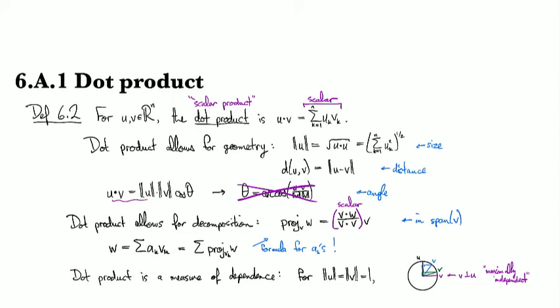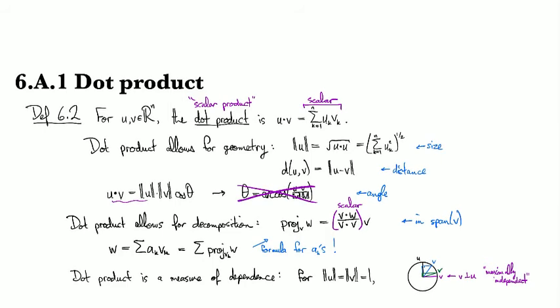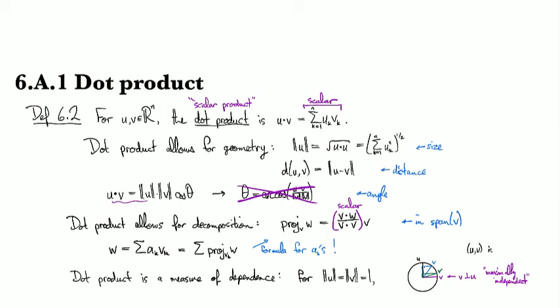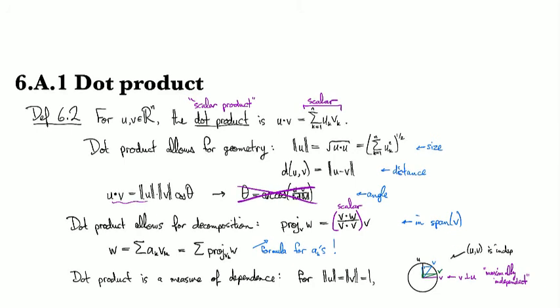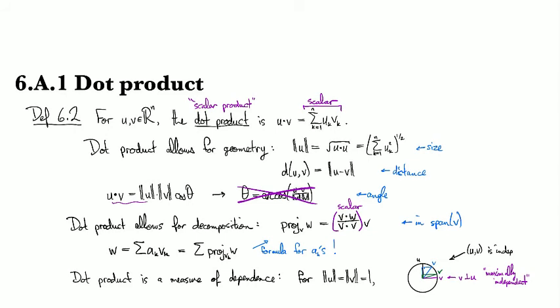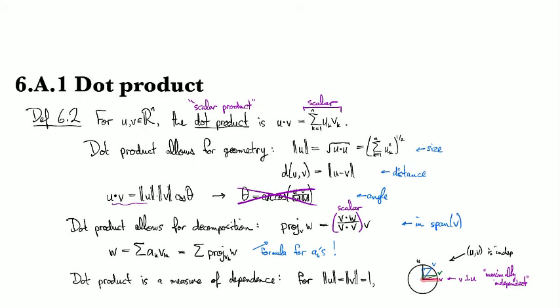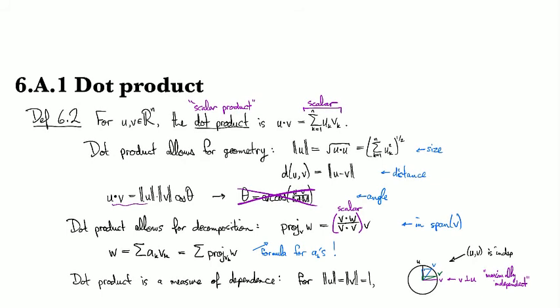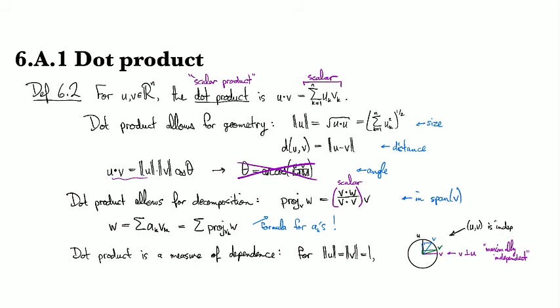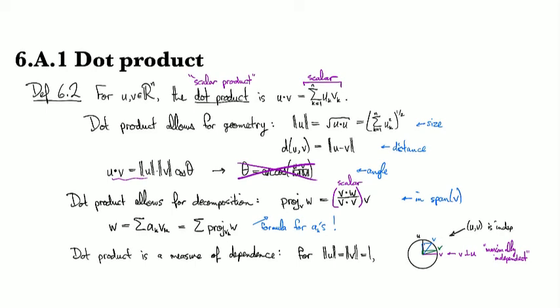So for all these v's that I've drawn, all of them are linearly independent with u, or rather the set uv is independent for all of those. But v does have something in common with u for some of those choices. But if I take this one that goes orthogonal to u, then there's nothing in common with u. So you can think of it as being maximally independent. And then you can also see from that that u and v are dependent precisely when their dot product is equal to one.